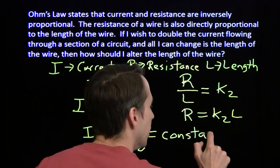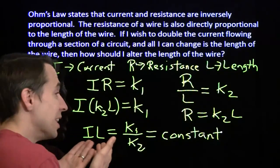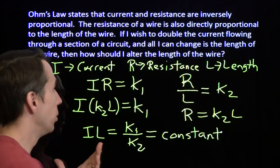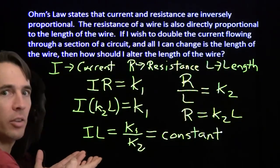That tells me that the current and the length, their product is constant, which means they're inversely proportional. So if I want to double the current, I have to halve the length of the wire.